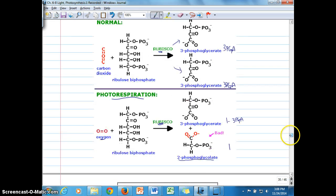So in essence, we have, under normal circumstances, this 5-carbon RUBP combines with CO2 to make a 6-carbon molecule, which splits into two 3-phosphoglycerates.